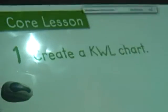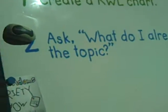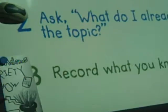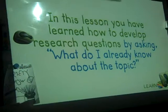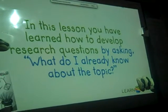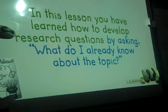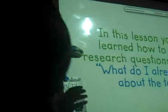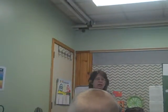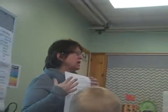We created a KWL chart, asked what we already know about the topic, and recorded what we knew in the chart. In this lesson, you learned how to develop research questions by asking: what do I already know about the topic? So that's one of the things you need to start with when you're doing your project. Now if you look on page 8, this handout on pages 8 and 9 is for you to use as reference as you work through this project.